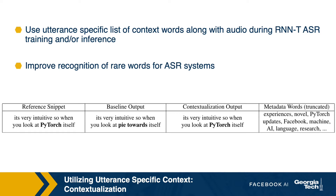the baseline model without contextualization might predict the words 'Py' and 'Torch' as two separate words instead of PyTorch. What we want to do is utilize a list of relevant contextual words corresponding to the audio, along with the audio signal, to generate the transcript. If we have seen PyTorch in the context of the audio, then we would like to utilize that context and predict the word PyTorch in the output of the ASR, especially when these contextual words are rare words.